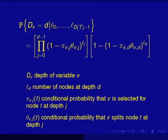If you look hard enough, you might be able to convince yourself that this first term is really measuring the probability that the variable V is not split at a depth less than D, whereas this term here is measuring the probability that it eventually does split at depth D amongst one of the L_D nodes at that depth.